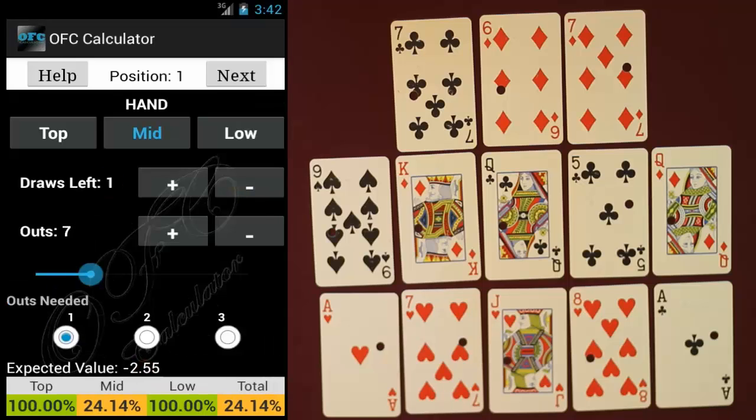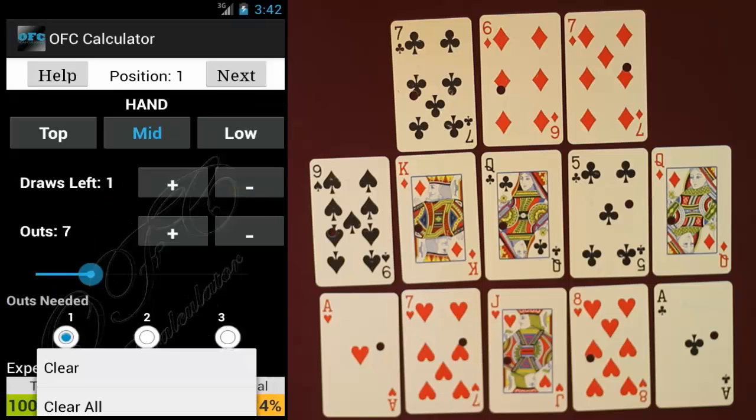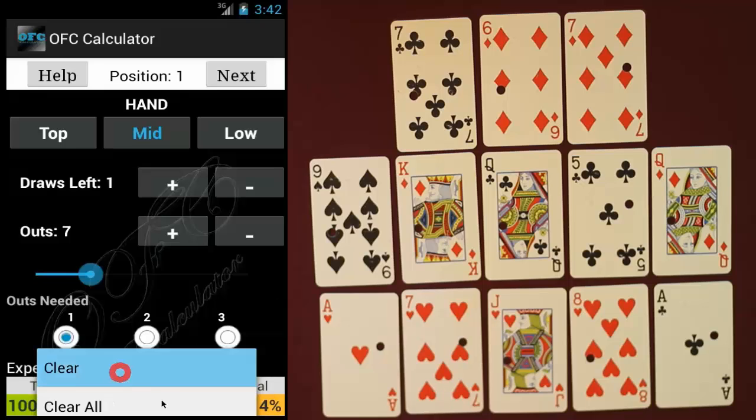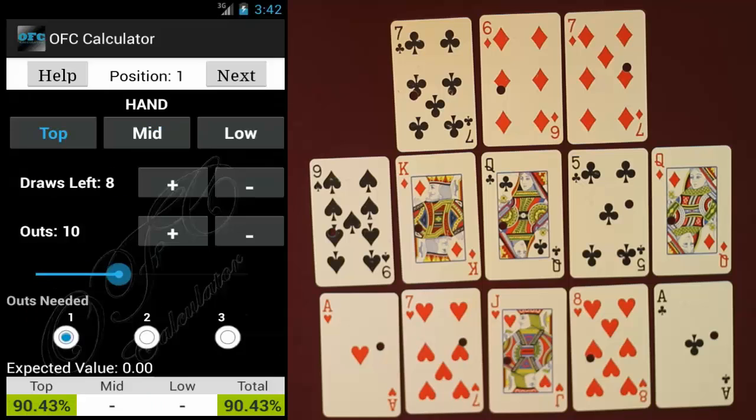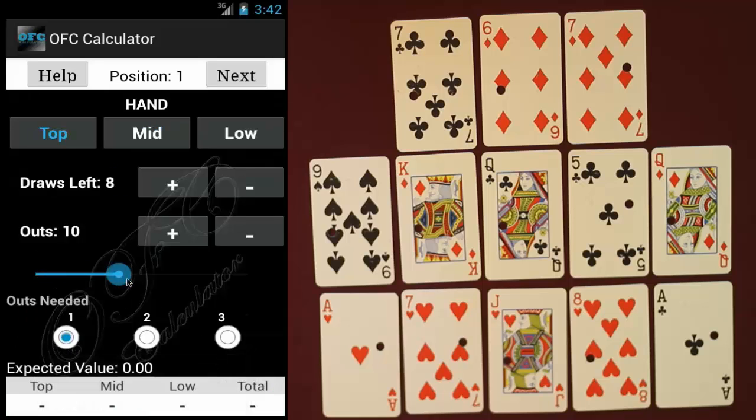A couple other features if you hit the menu button a clear and clear all options pop up. And if you click clear it will just clear the current selected hand whether it be top, middle or low. If you hit clear all it will clear all the hands. Once you have completed the hand you can hit the next button in the top right and it will automatically advance your position and reset all the fields.